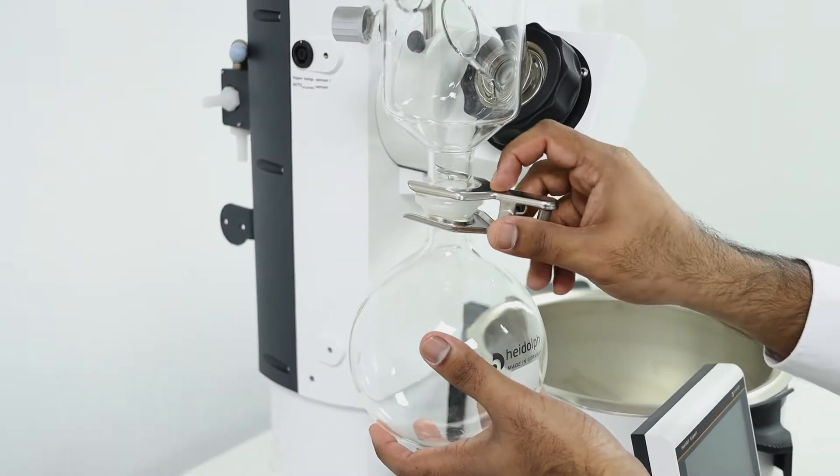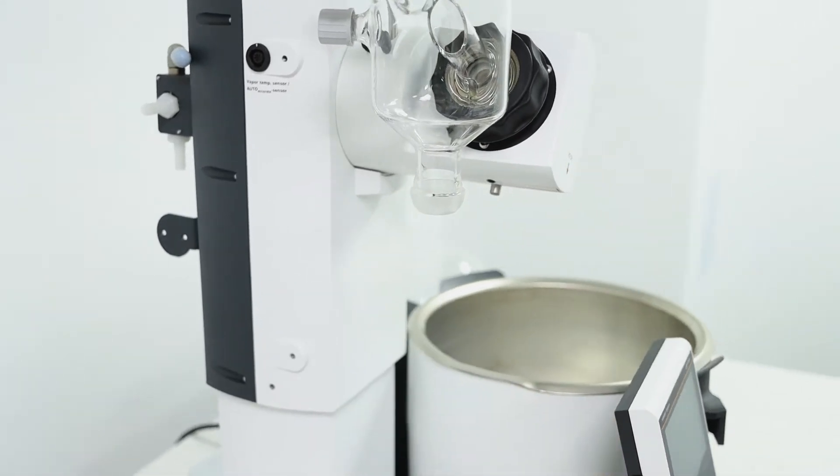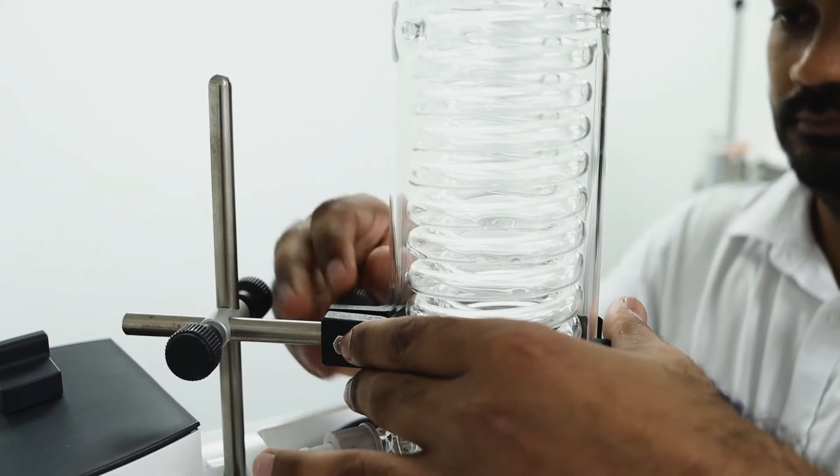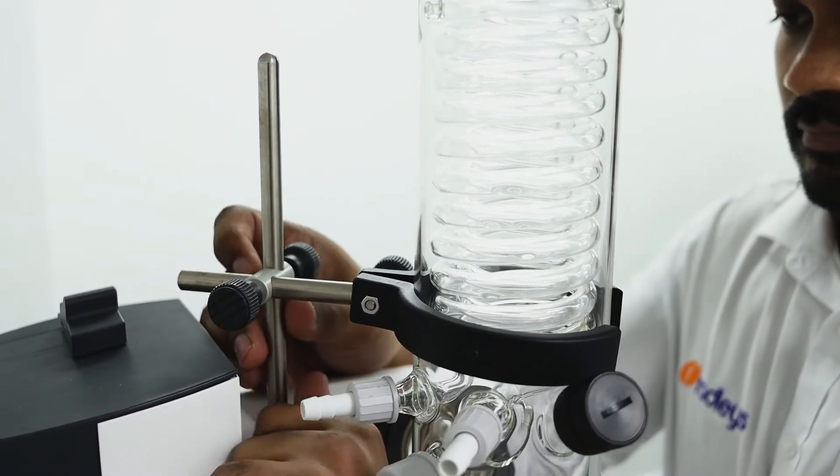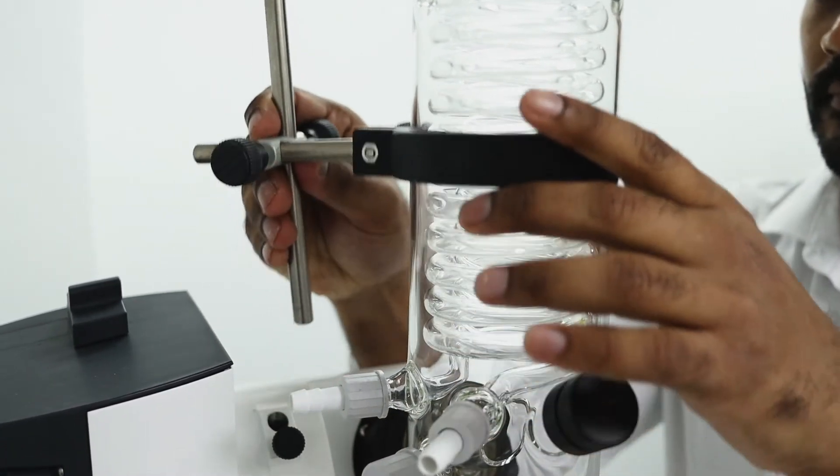Next you remove your collection flask by taking off this metal clip. Next remove the condenser support rod by firstly loosening the clamp, then the securing knot, and then lifting it over the condenser.